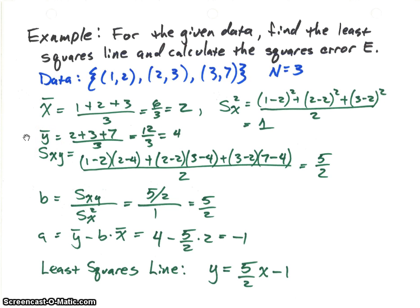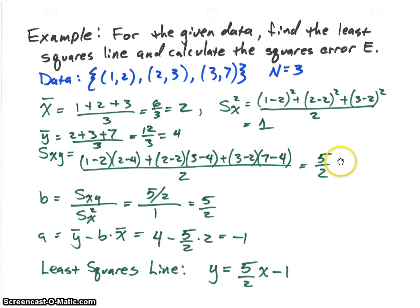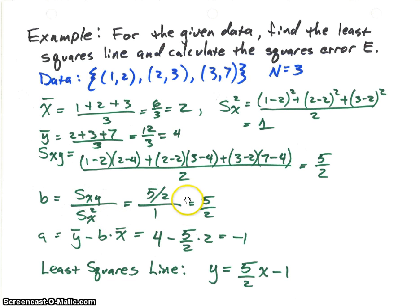The mean for y: we add up the y values and divide by 3, giving a mean of 4. For the sample covariance of x and y, we take each x value minus its mean times the corresponding y value minus its mean, sum all those values, and divide by 2 (n minus 1). That gives a covariance of 5/2. The slope b is the sample covariance divided by the sample variance for x: 5/2 divided by 1, so b equals 5/2.